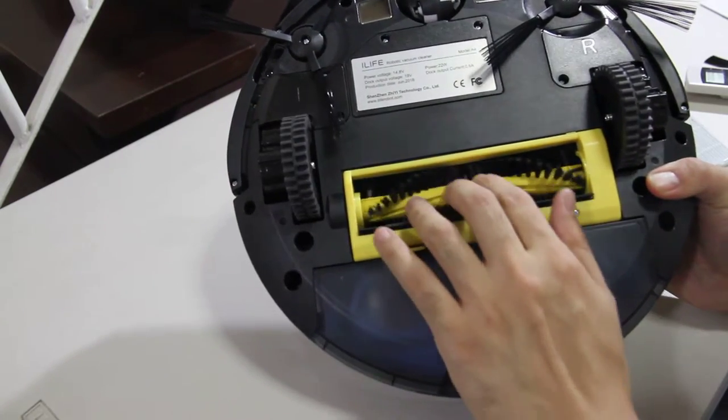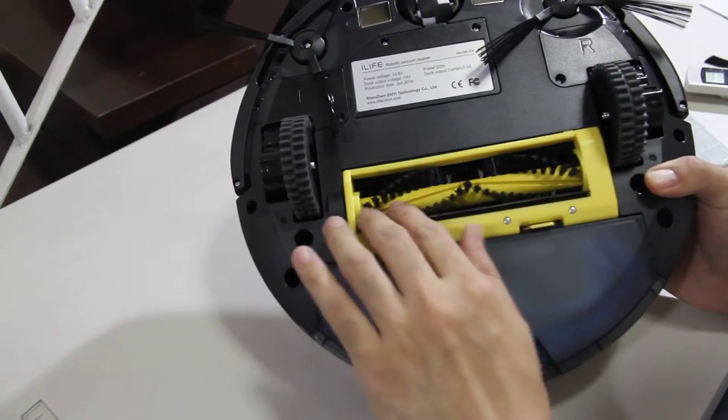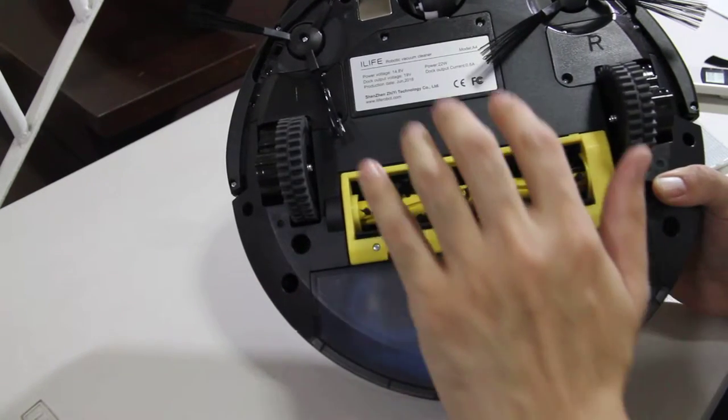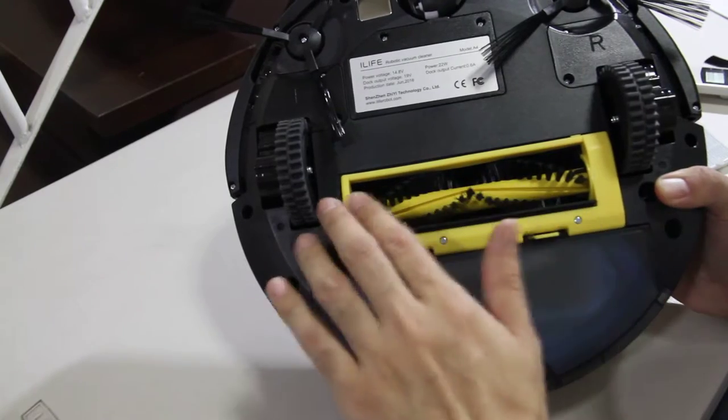And this is the main beater bar here. And it has a squeegee here to funnel so that dirt doesn't get past this area.